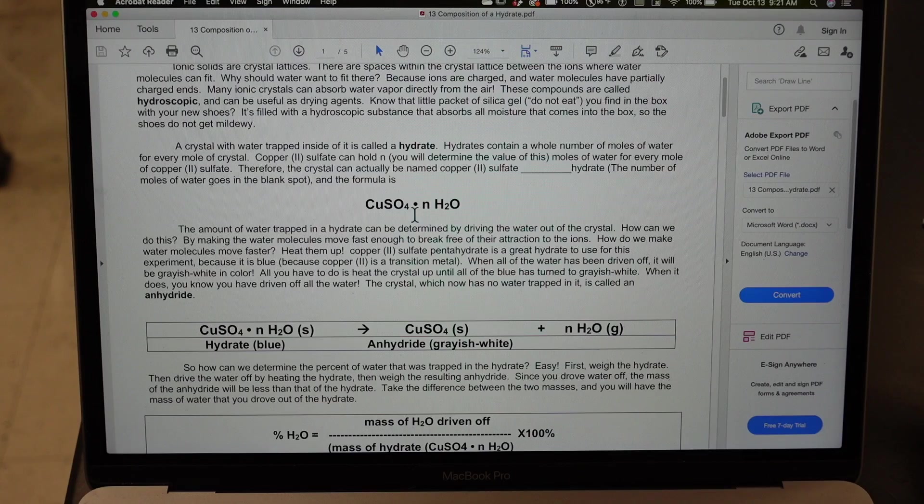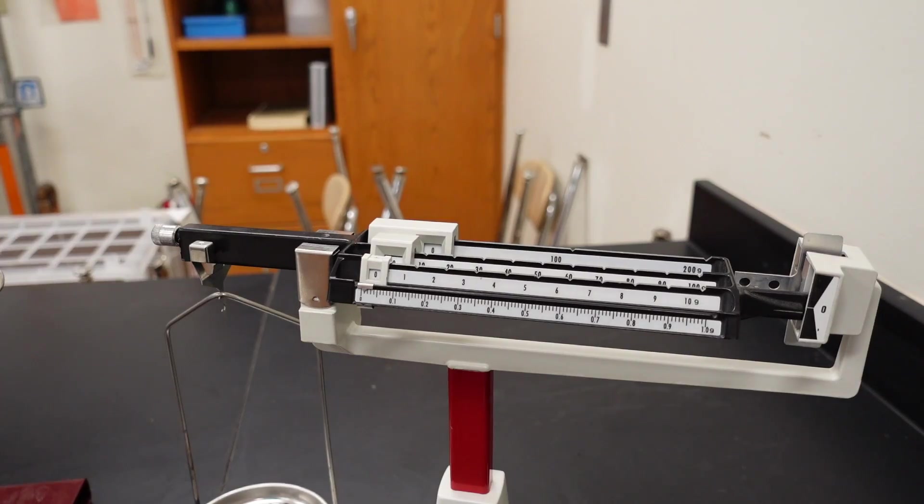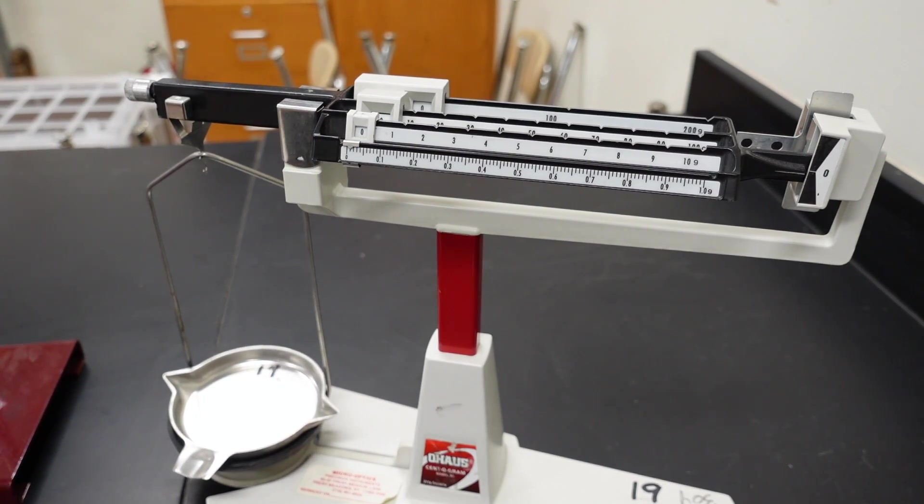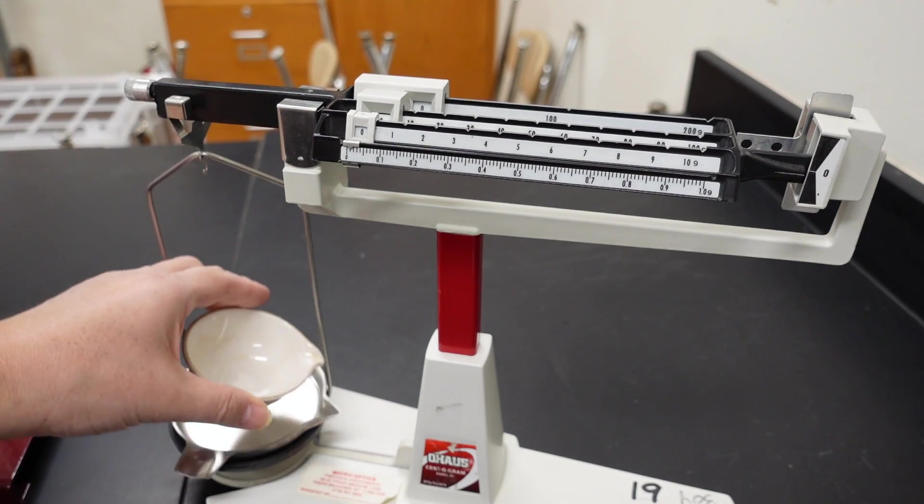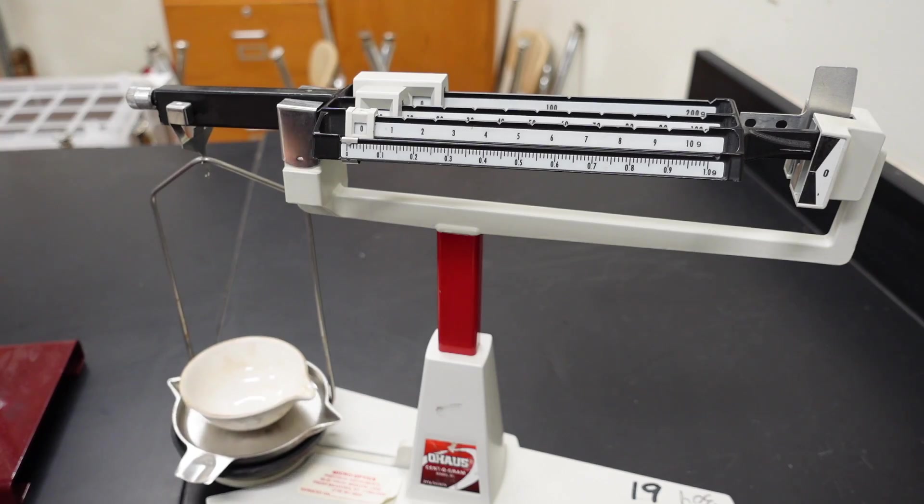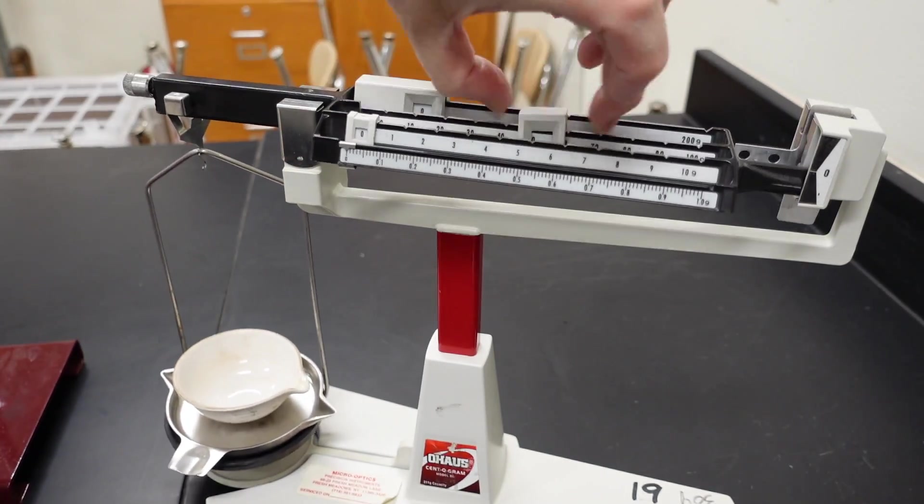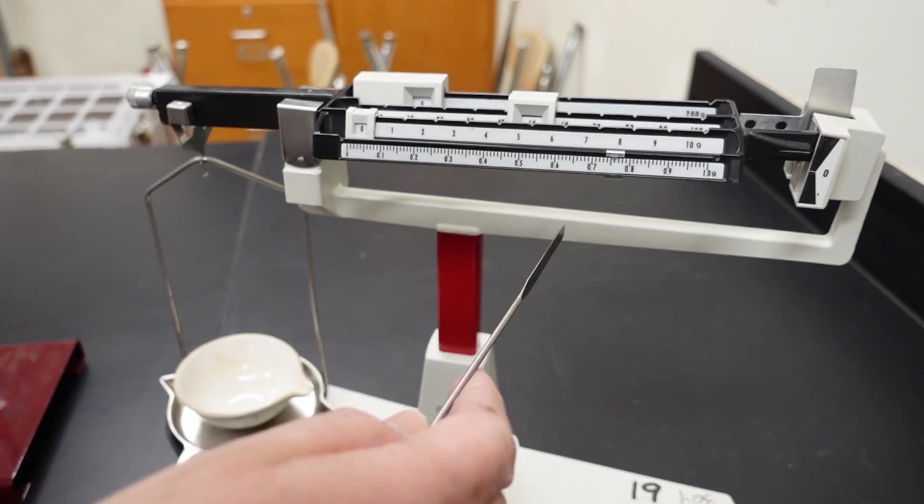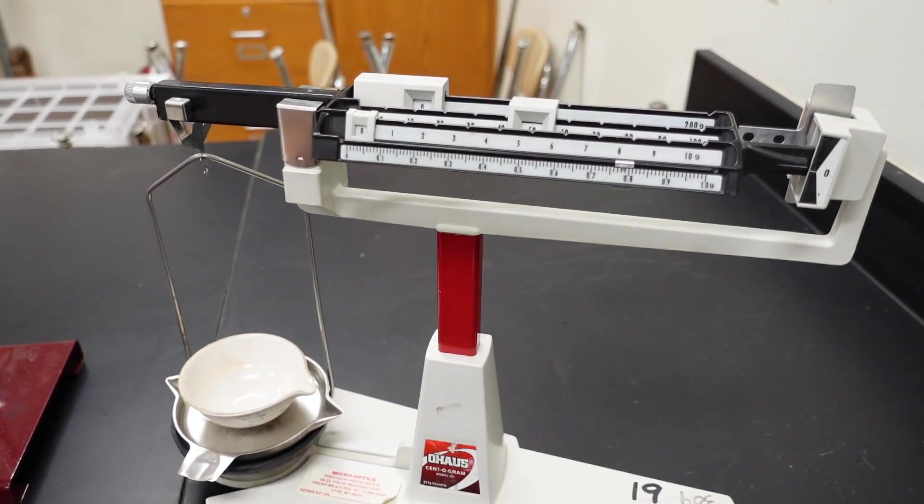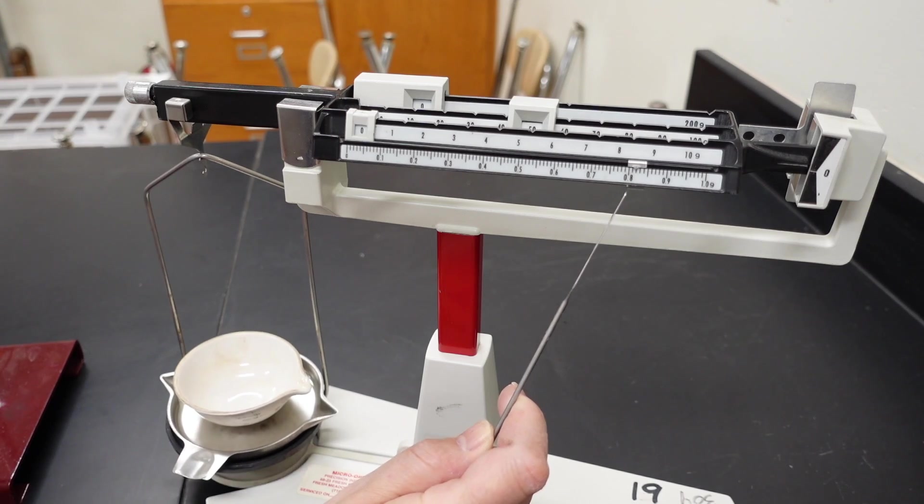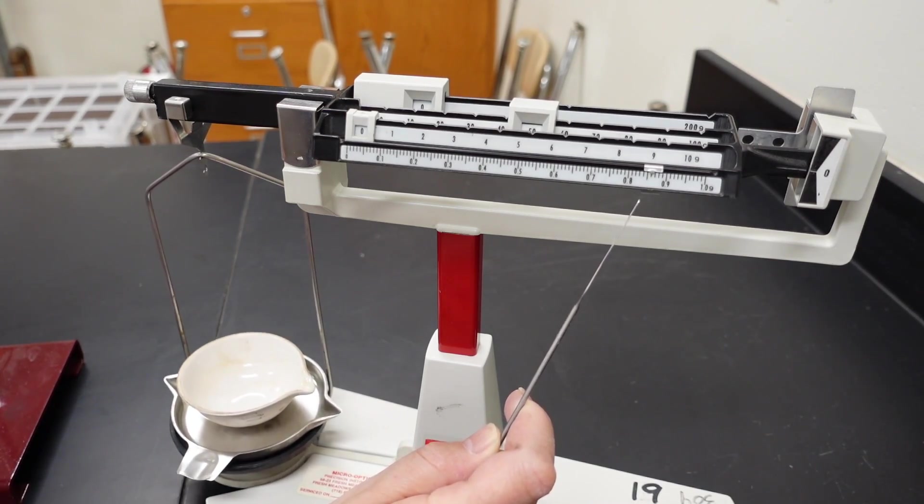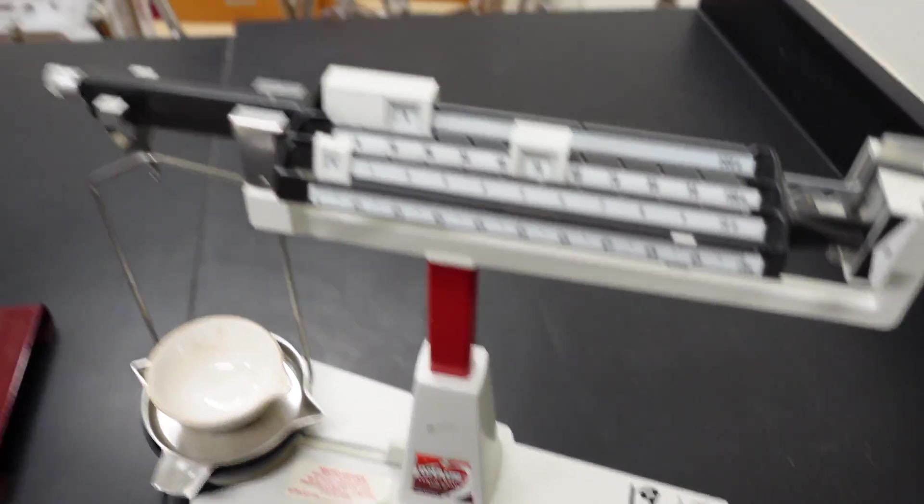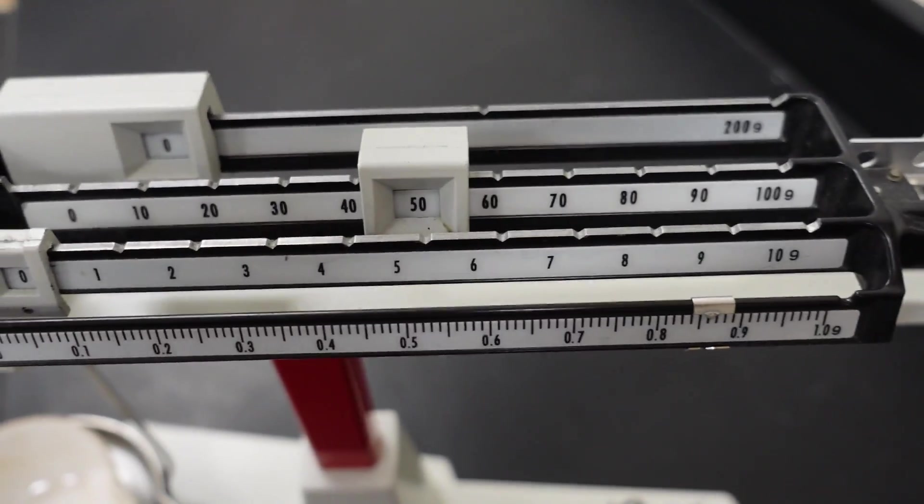So let's go ahead and start the lab. The first thing we have to do is record the mass of the empty evaporating dish. So let's go ahead and do that now. Cue the music! Okay, now we have the mass of the dish. So go ahead and read it off the balance.